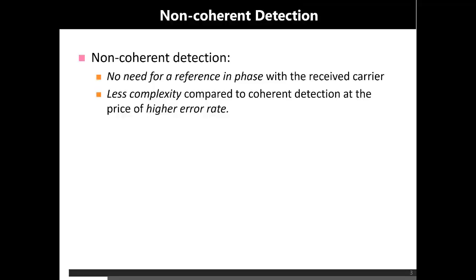Before discussing DPSK, let us first discuss what is meant by non-coherent detection. The previous three lectures were focused on coherent detection of bandpass modulation. The essence of coherent detection is that the receiver side uses the phase of the carrier as a reference to demodulate the received symbols. Non-coherent detection means there is no need for a reference in phase with the received carrier. That is the main difference: non-coherent detection does not use phase information on the receiver side.